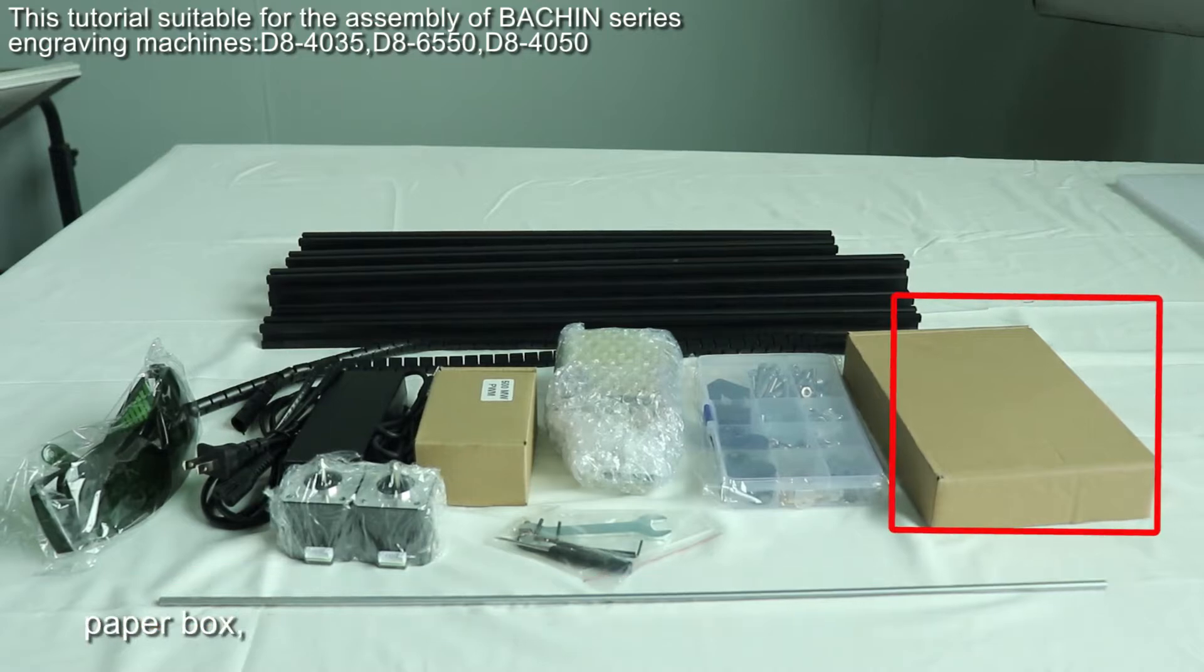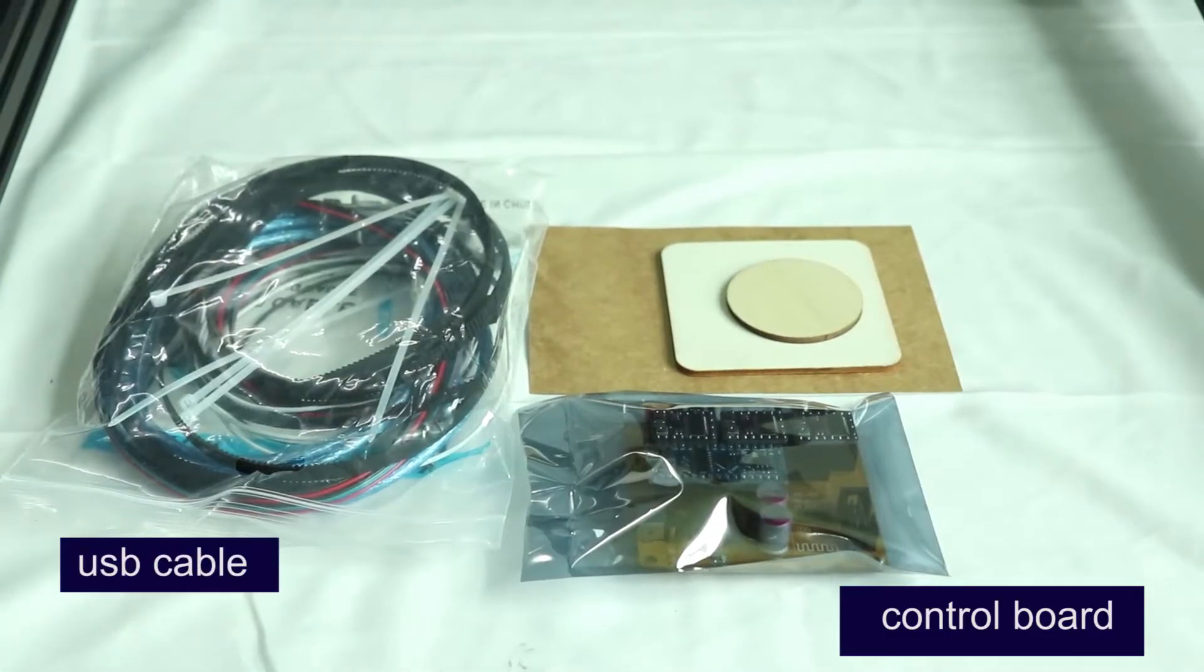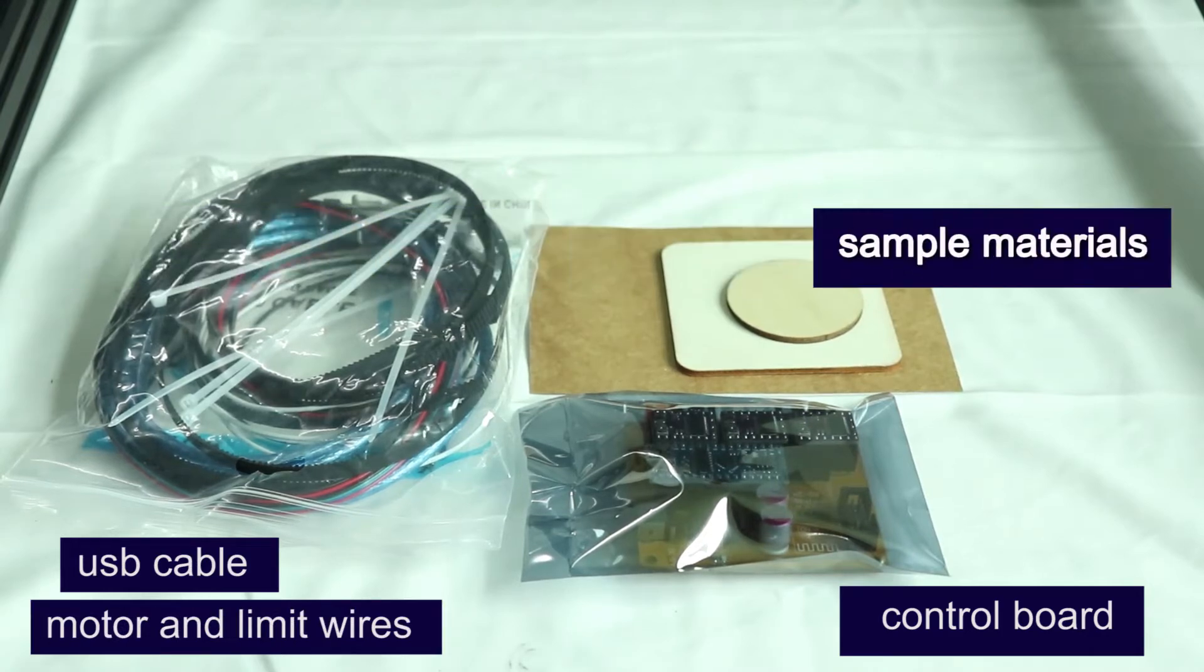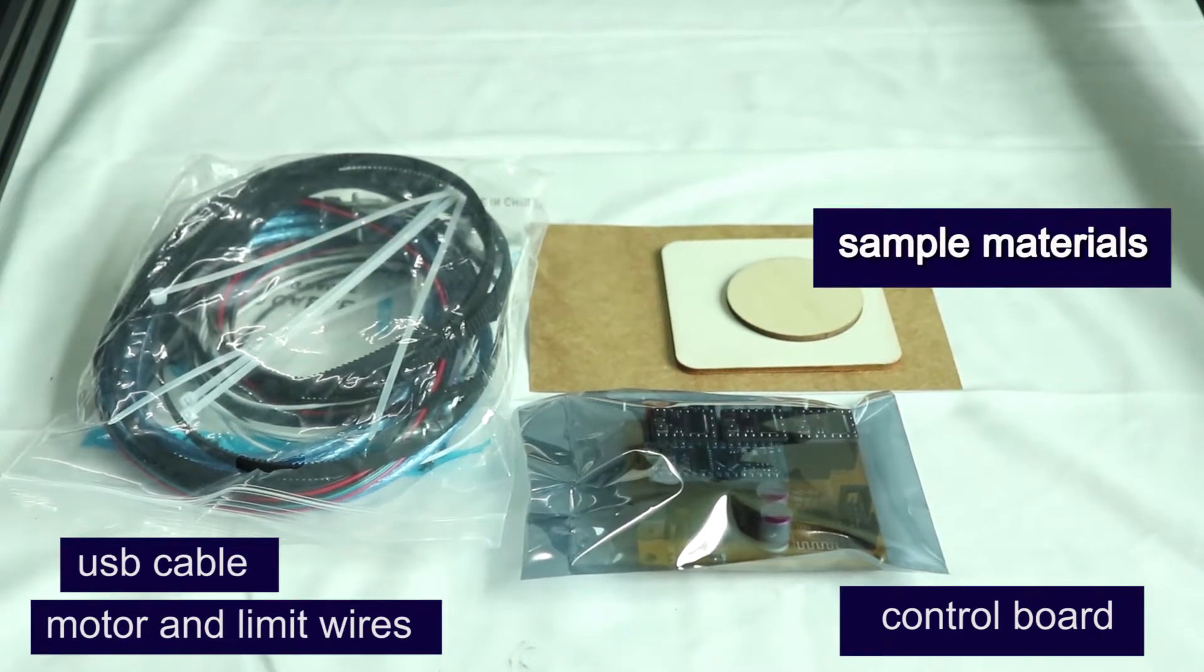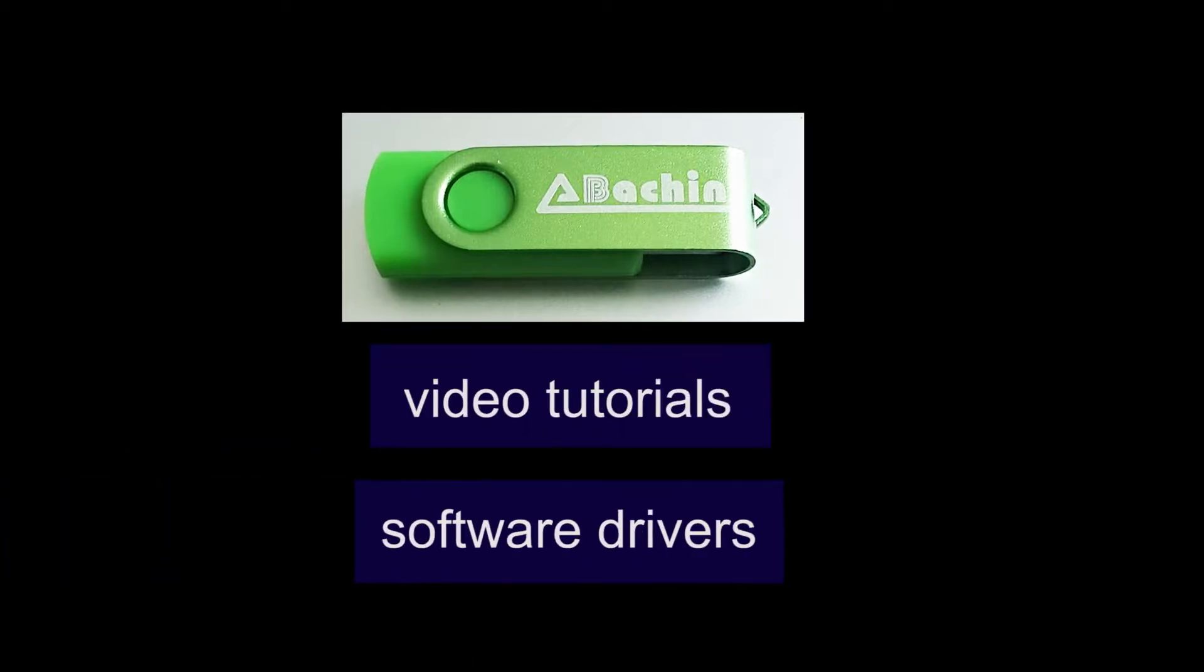A guide rail, paper box which has a control board, USB cable, motor and limit wires, and some sample materials inside. Maybe there is also a USB flash drive which contains video tutorials and software drivers.